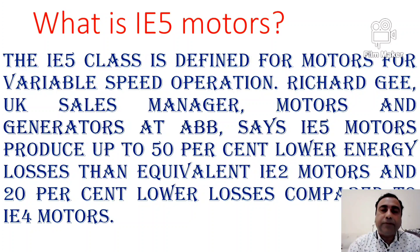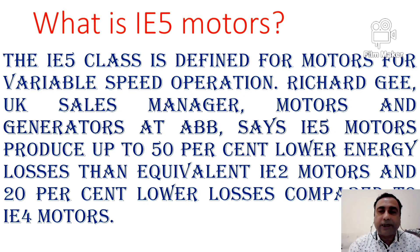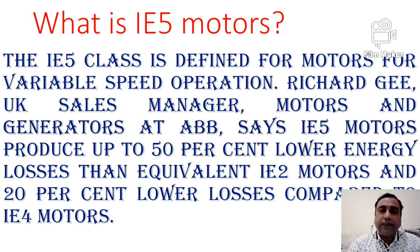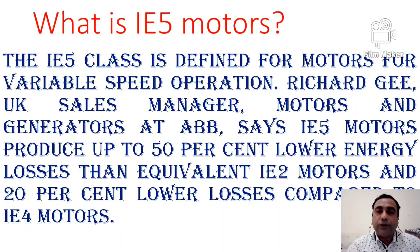The IE5 ultra premium efficiency class is defined for motors for variable speed operation. Richard Gee, UK sales manager for motors and generators at ABB, says IE5 motors produce up to 50% lower energy losses than equivalent IE2 motors and 20% lower losses compared to IE4 motors. The main concern here is energy consumption.